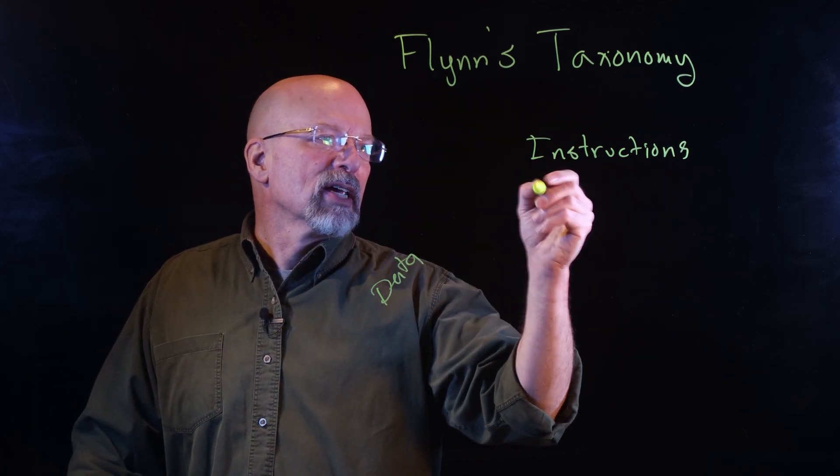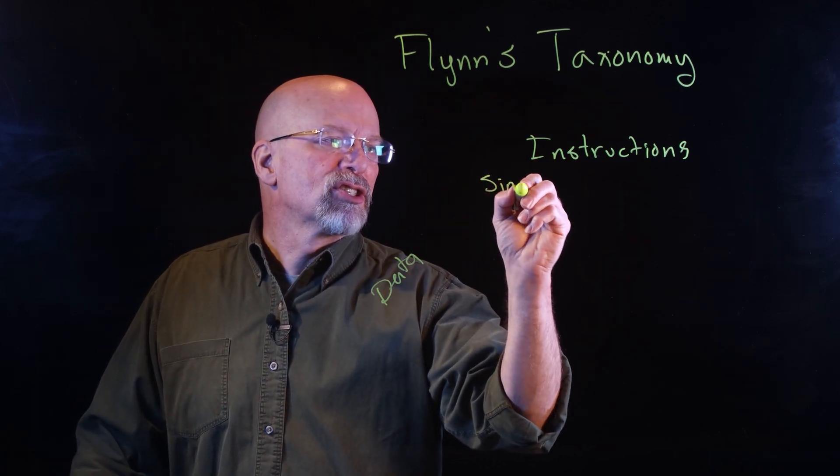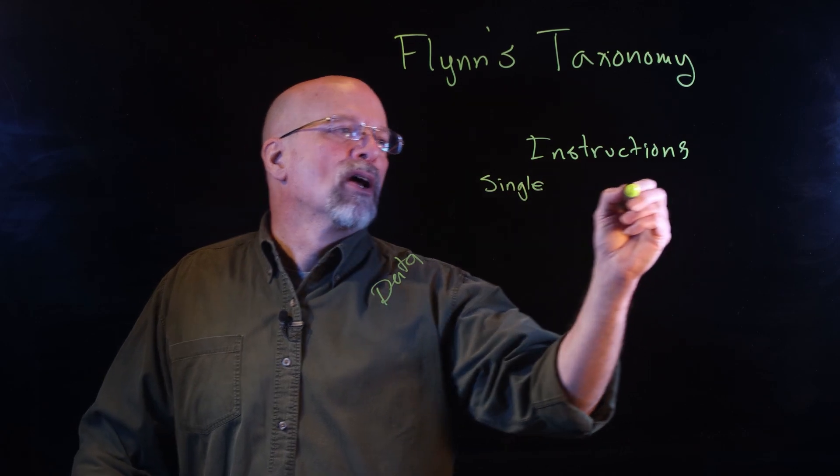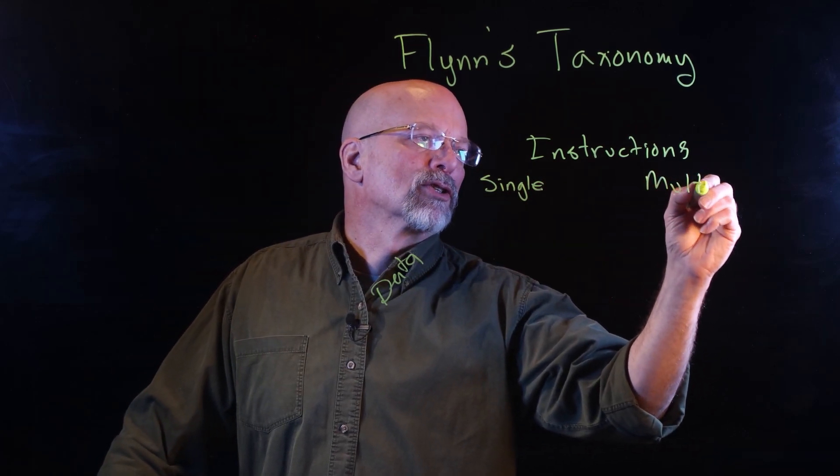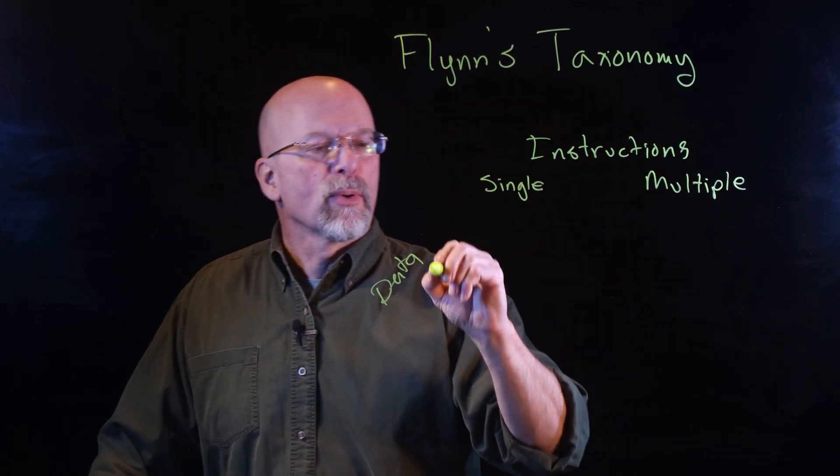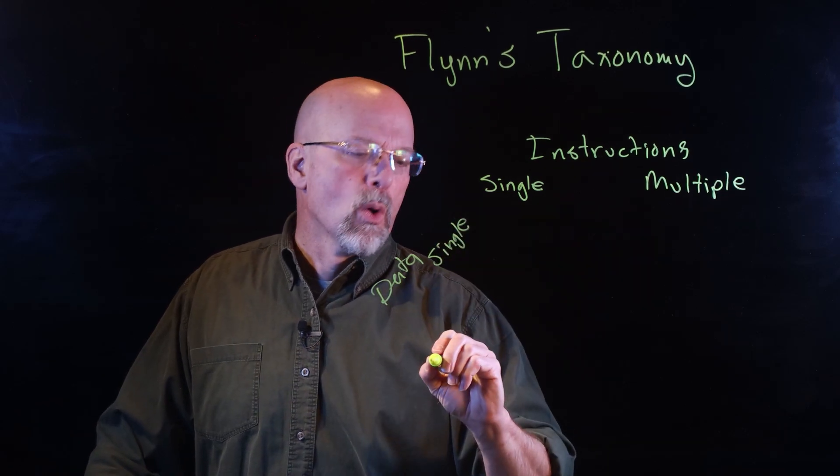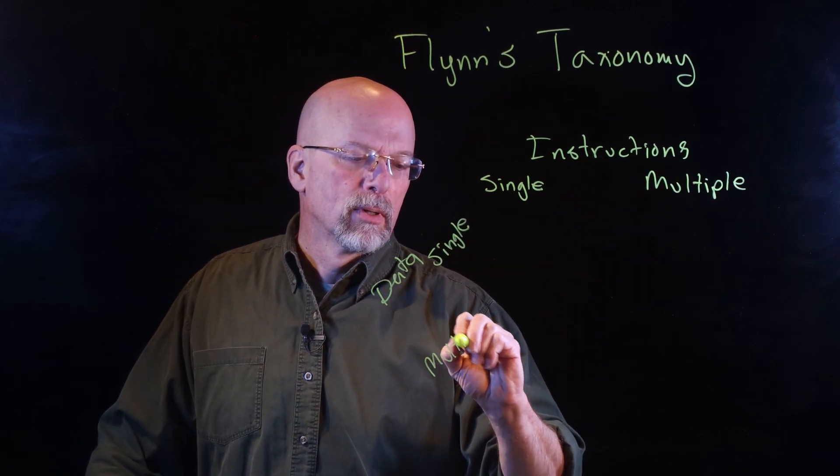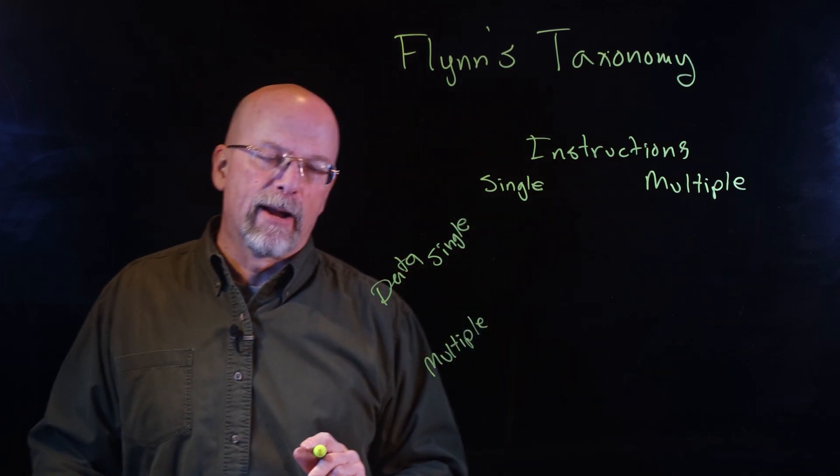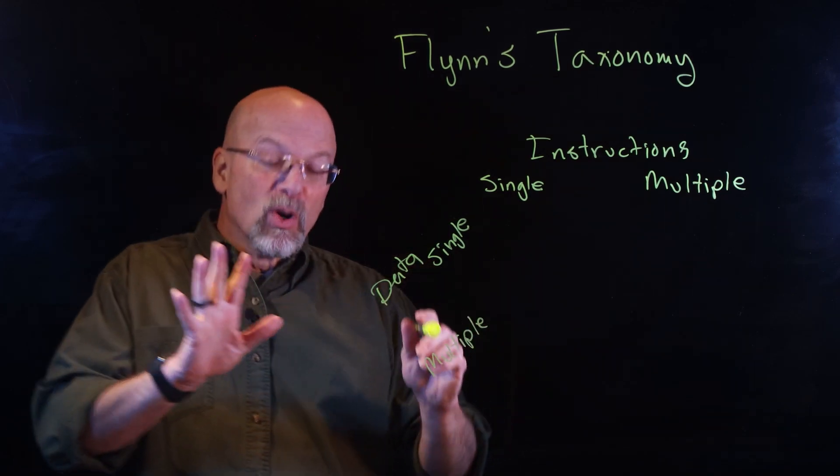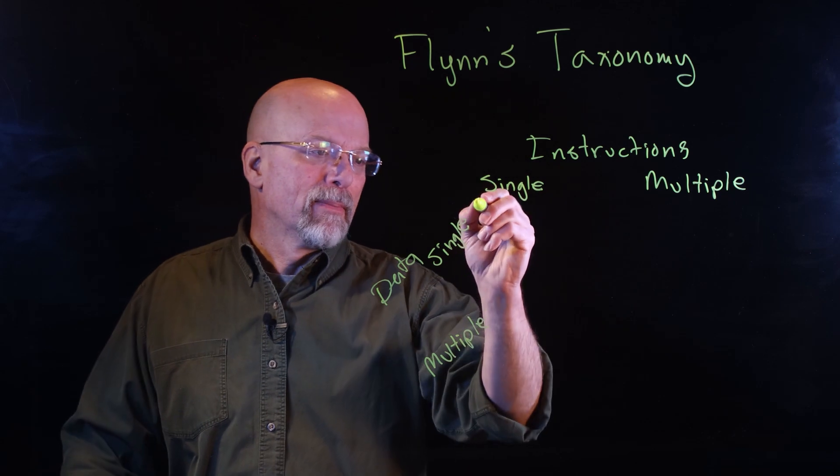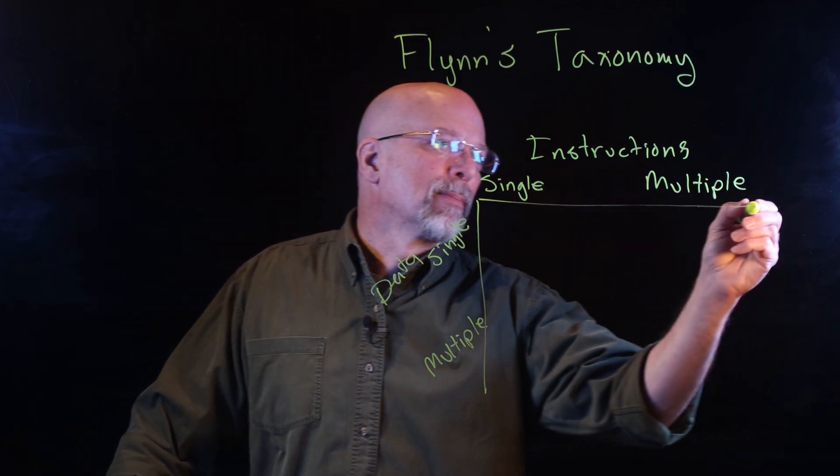Flynn's Taxonomy said, really, based on two characteristics, the instructions and the data, we can classify a parallelized system. The way we look at this is I can have a single instruction or multiple instructions operating on a single data stream or on multiple data streams. Each one has a name, and I'll just draw a little matrix up here.